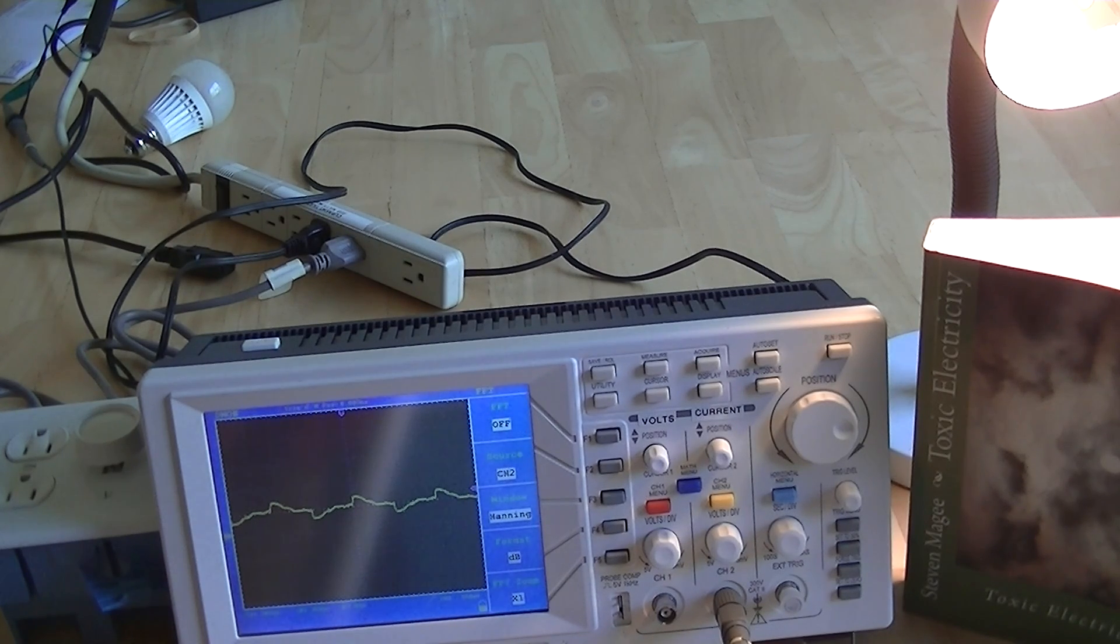So currently our scale is set to 500 millivolts per division in the vertical direction and 5 milliseconds in the horizontal direction per division.